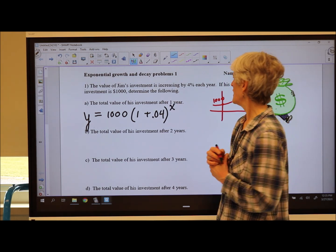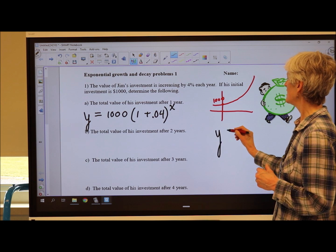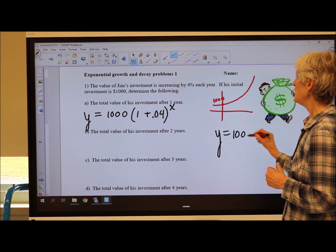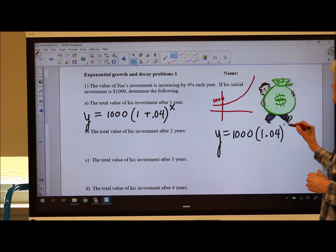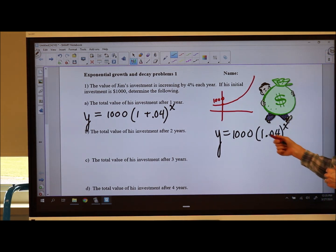If you want, you can combine 1 plus 0.04 and just rewrite it as 1,000 times 1.04 to the X.